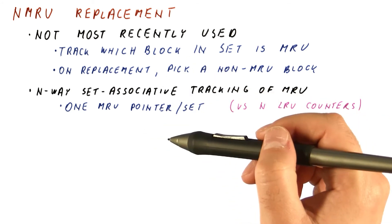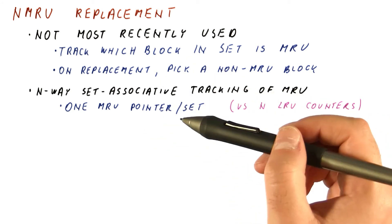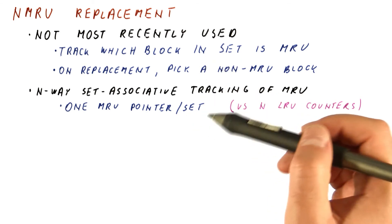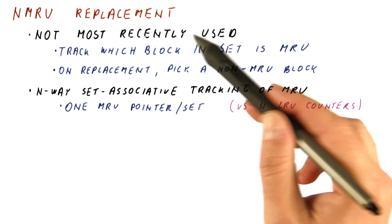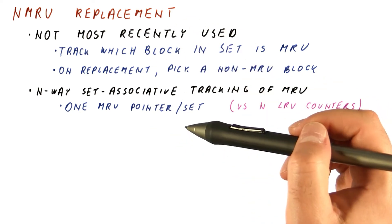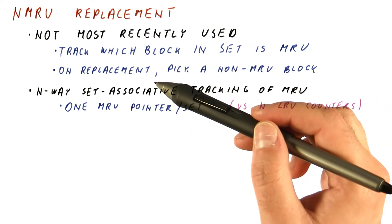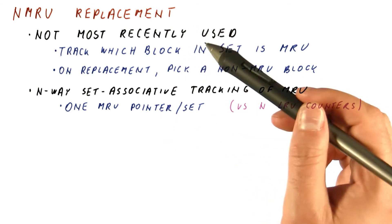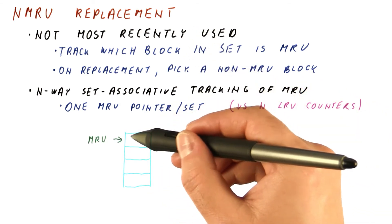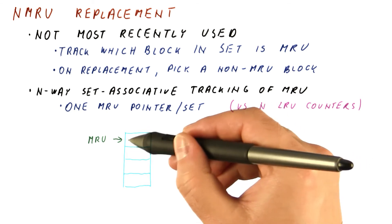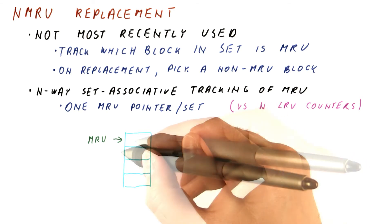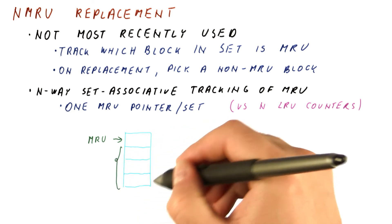It turns out that this policy works reasonably well. It does have a hit rate that is slightly lower than true LRU, but if this is what it takes to make our cache go from a two-cycle hit time to a one-cycle hit time, it might be worth it. A disadvantage of this policy is that although it prevents the most recently accessed line from being evicted, it doesn't know what the order is among the rest of them.